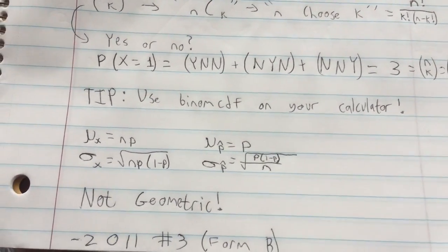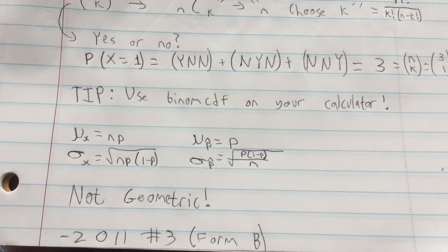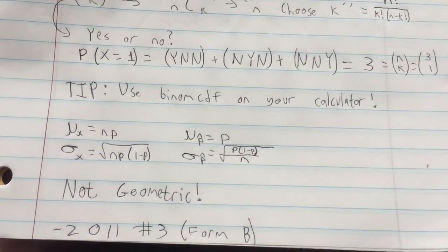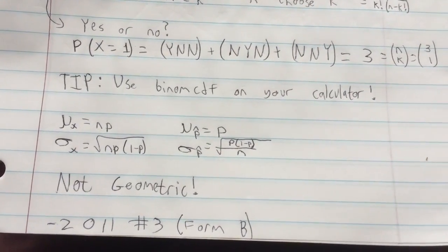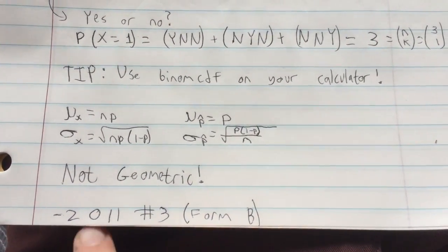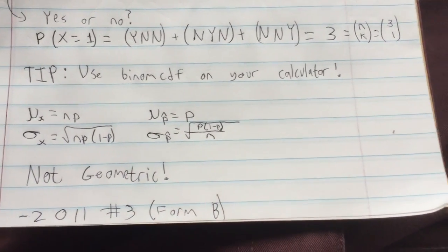So on the AP test, don't make this common mistake. Don't mistake a binomial distribution for a geometric distribution. And on your calculator, make sure you say binom CDF and not geometric CDF. If you want more practice, you can look at the AP question FRQ 2011 number 3 on form B.